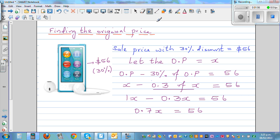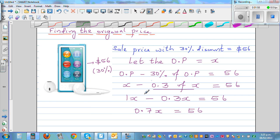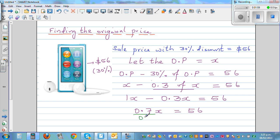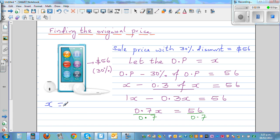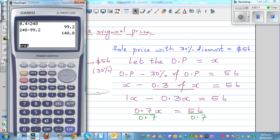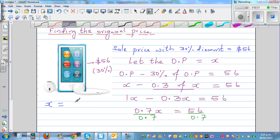Now I want to cancel this 0.7, so I'm going to divide both sides by 0.7. X equals 56 divided by 0.7, which is 80. The price was $80.